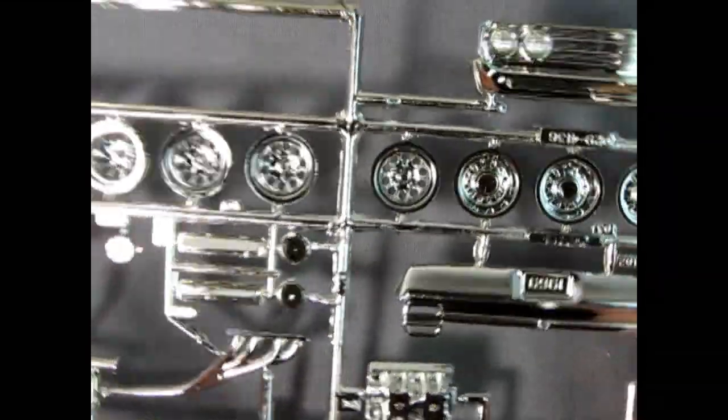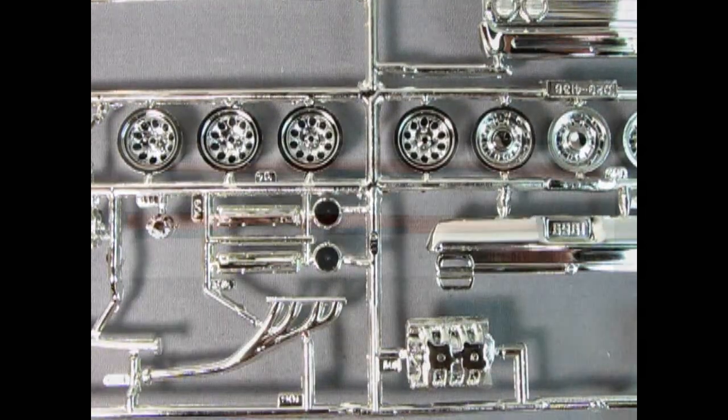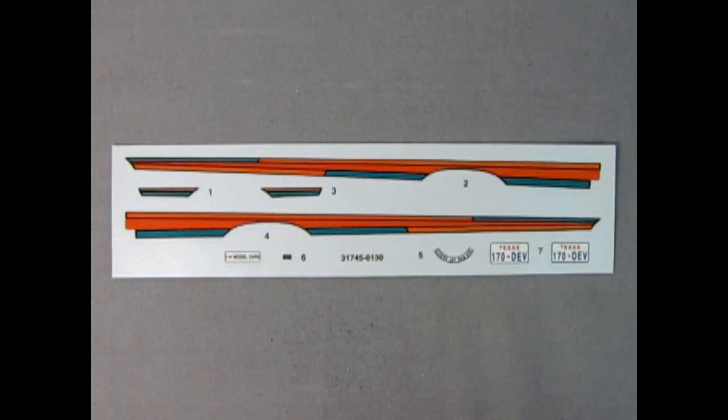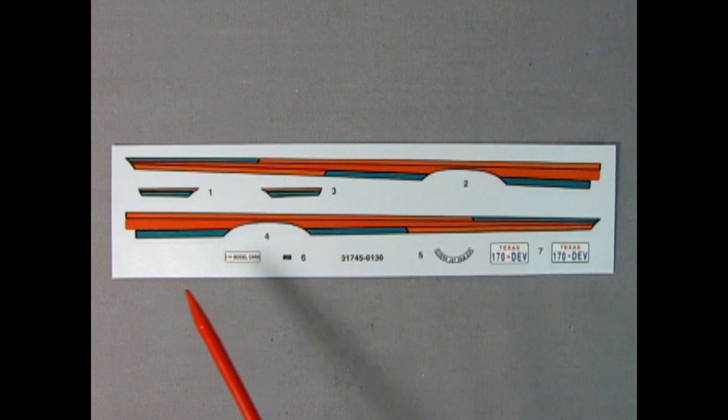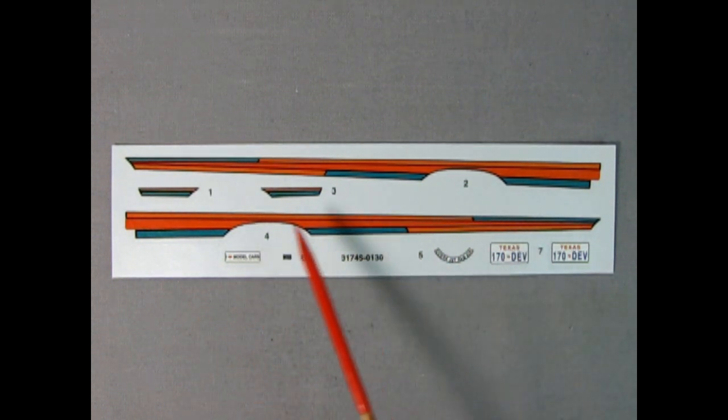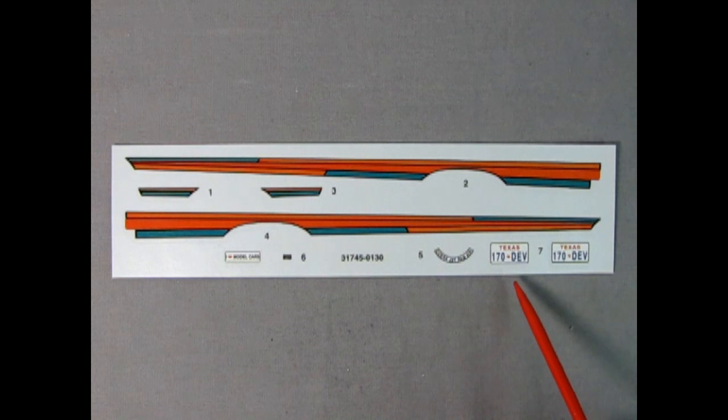Finally, we have the RC2 decal sheet. Which was a carryover from the AMT Ertl decal sheet of the late 1980s. It has these tri-colored stripes that run the length of the body. And a pair of engine bay decals. And a I Love Model Cars bumper sticker. And a pair of Texas license plates. 170 DEV. The new decal sheet from Round 2 is much better. And includes a choice of black or white stripes. And a whole lot more.